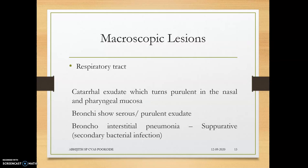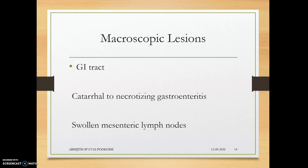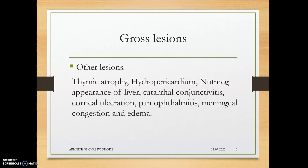In macroscopic lesions, catarrhal exudate is present in the respiratory tract, which turns purulent in nasal and pharyngeal mucosa due to bacterial pneumonia and viral bronchointerstitial pneumonia — suppurative inflammation is occurring. In the GI tract, there are swollen mesenteric lymph nodes and catarrhal to necrotizing gastroenteritis due to viral replication bursting cells. Other lesions include thymic atrophy, hydropericardium, hepatitis, catarrhal conjunctivitis, corneal ulceration, panophthalmitis, and meningeal congestion.